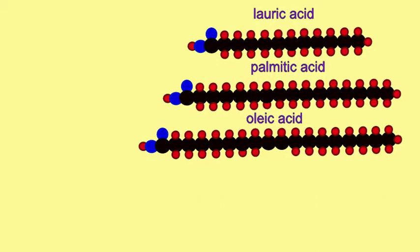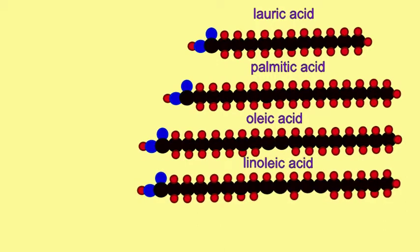Oleic acid is unsaturated because it has a double bond at position 9. Linoleic acid possesses two double bonds.